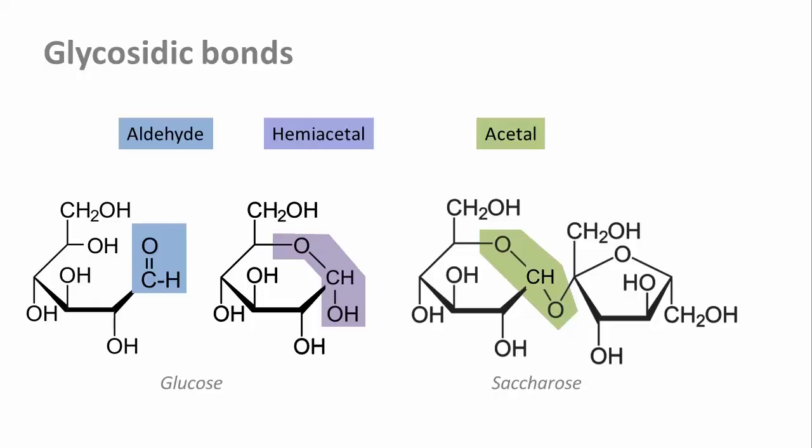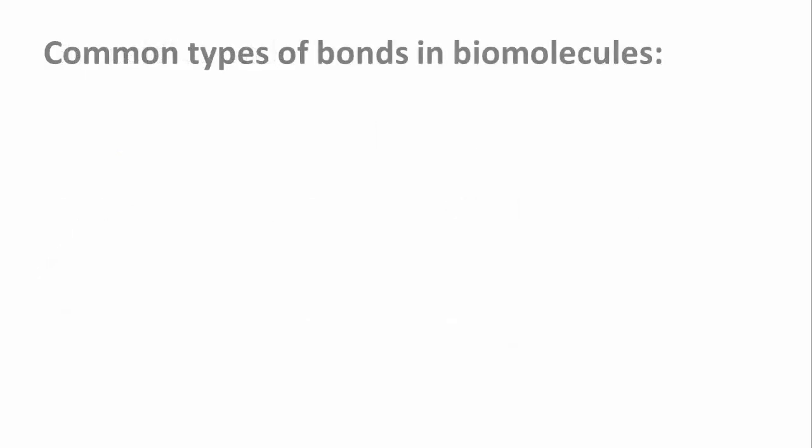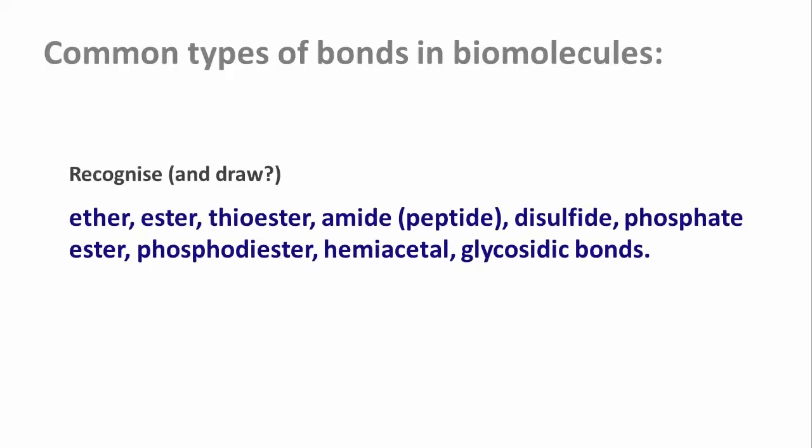So let's recap. Functional groups in biomolecules join up to form a number of covalent bond types that are typical in biochemistry and worth remembering. You should now be able to recognize and ideally draw all of the following types of bonds: ethers, esters and thioesters, amides, disulfide bonds, phosphate esters and phosphodiesters, hemiacetals and glycosidic bonds.